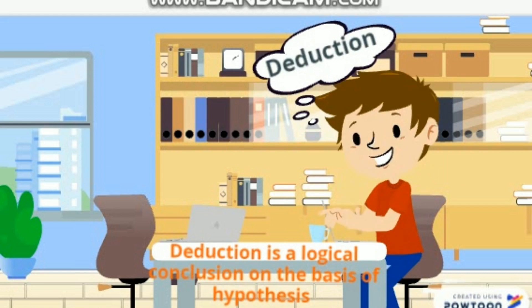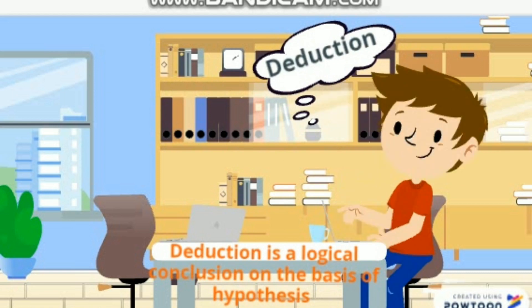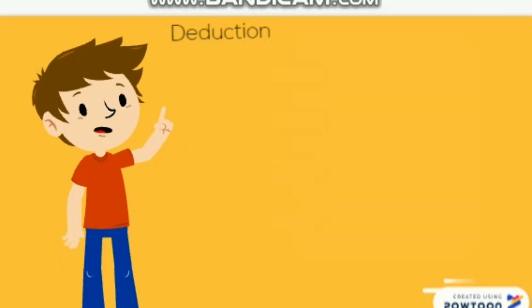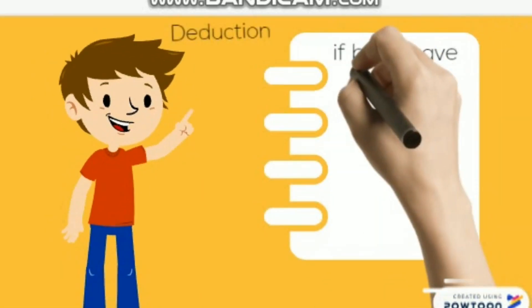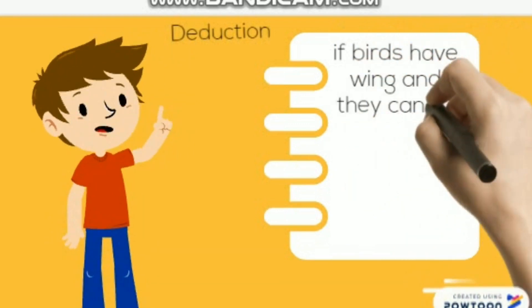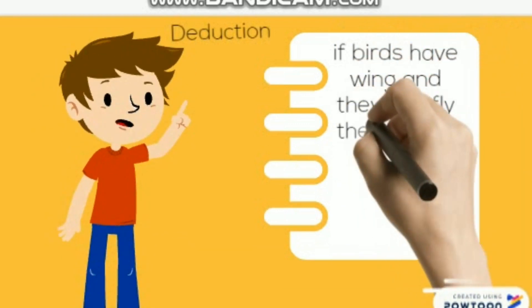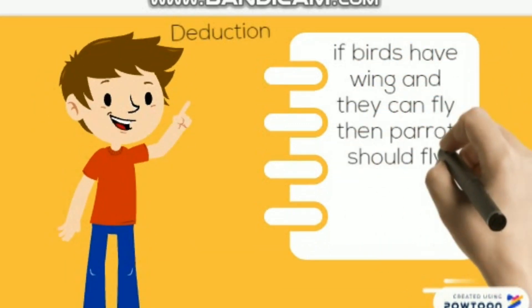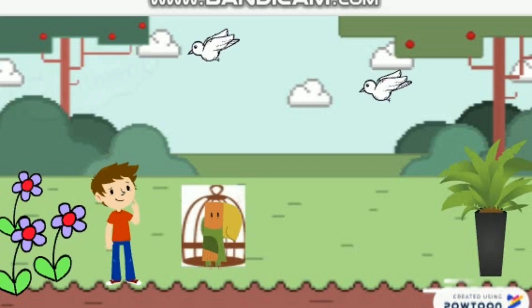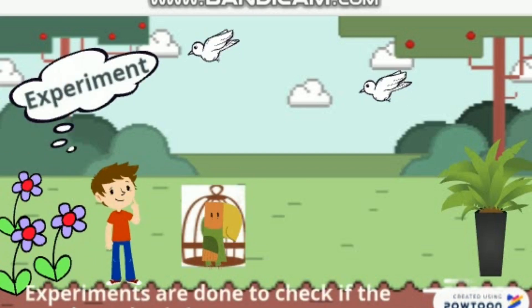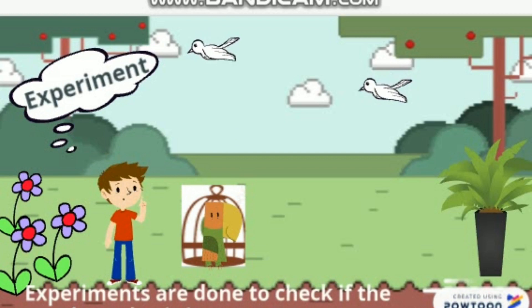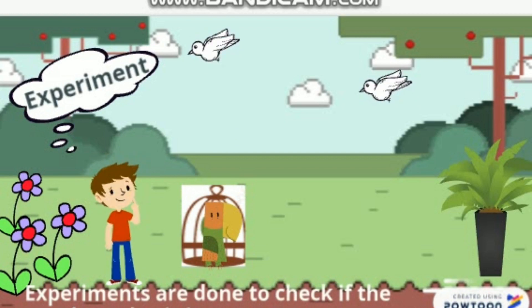On the basis of the hypothesis, Tim tries to make a deduction. Deduction is a logical conclusion drawn on the basis of a hypothesis. Tim made a deduction: if birds have wings and they can fly, then parrots should fly too, as they have wings.